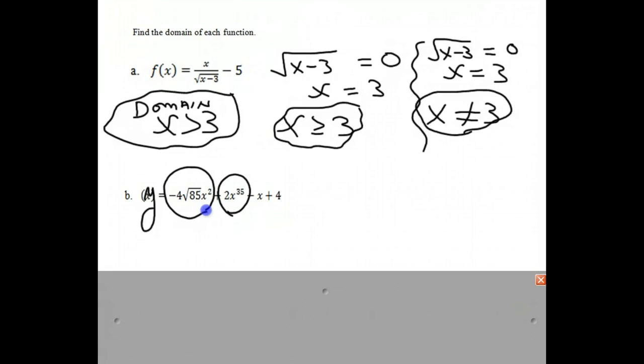In our second term, we could have any x value there, it would be perfectly legitimate. Our third term, we could have any x value there, and our fourth term is just 4. Therefore, there's no restrictions, and our domain is all real numbers.